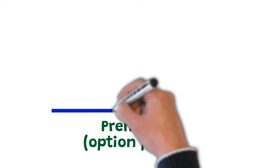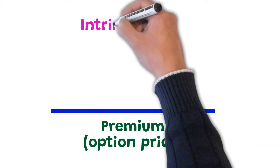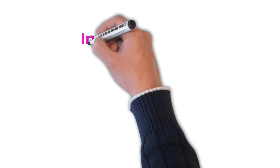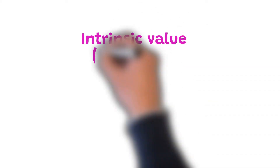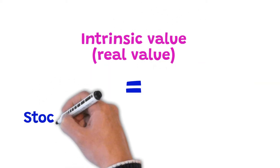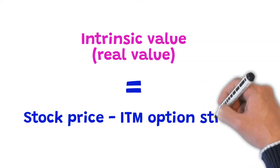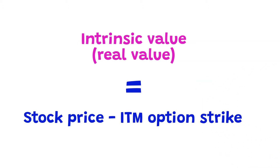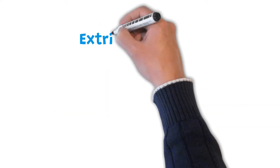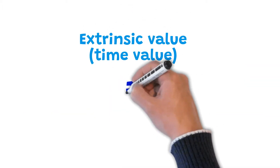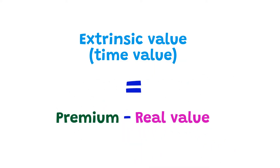Premium or option price equals intrinsic value, or real value, plus extrinsic value, or time value. Intrinsic value is the difference between in-the-money options and the stock price — hence there will only be real value in an option price if the underlying share is trading above the strike for calls and below the strike for puts. Time value is the rest: the total premium minus the intrinsic value.